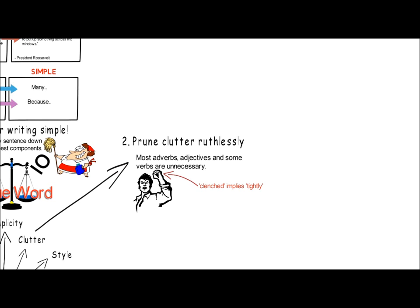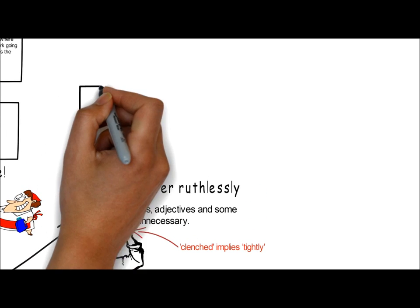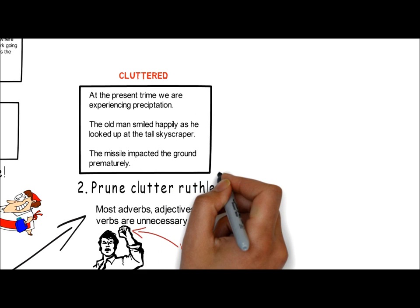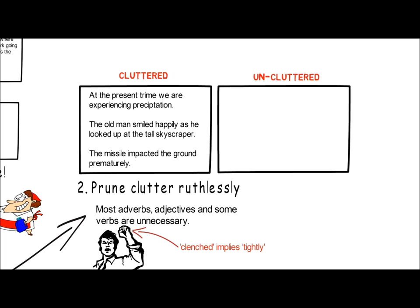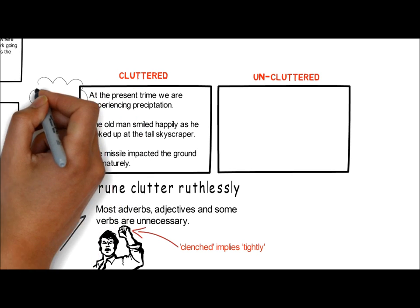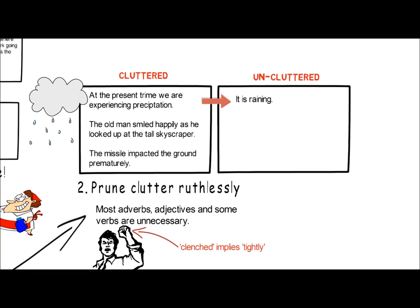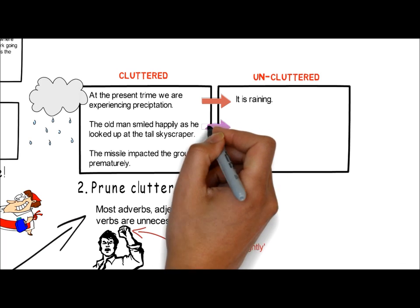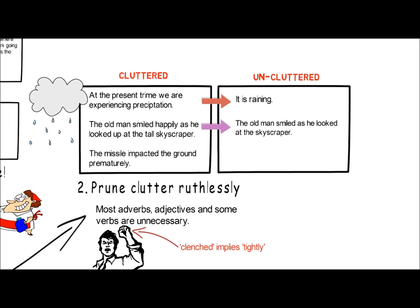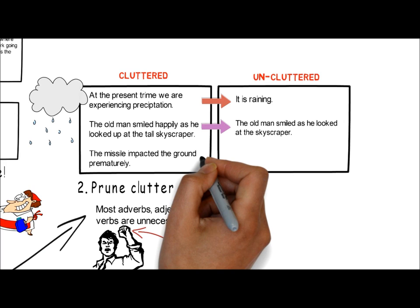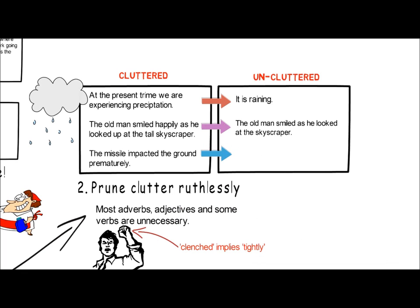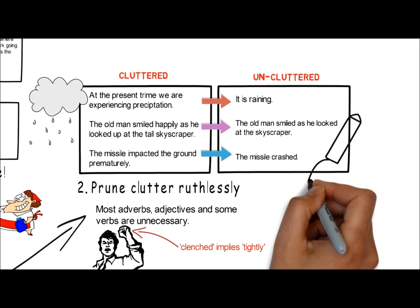The space savings of such pruning can be significant. Here are some examples of cluttered sentences. 'At the present time we are experiencing precipitation' could be more simply stated as 'it is raining.' 'The old man smiled happily as he looked up at the tall skyscraper' could be more simply stated as 'the old man smiled as he looked at the skyscraper' — smile already implies happiness, and skyscraper by definition is tall and would require you to look up. Finally, 'the missile impacted the ground prematurely' could be decluttered to 'the missile crashed.'